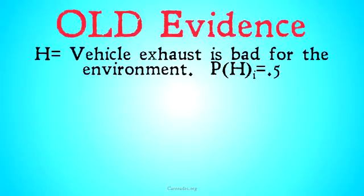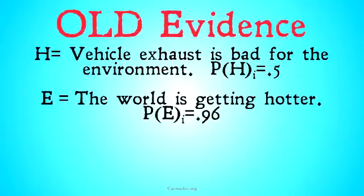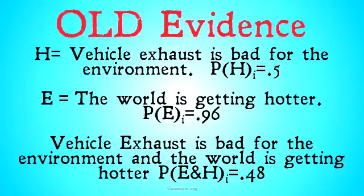Imagine that our hypothesis is 'vehicle exhaust is bad for the environment.' We're not sure if this hypothesis is the case, so we give it a 0.5 degree of belief. We also have a piece of evidence: 'the world is getting hotter.' We're very certain of this — 0.96 certain. And because we don't see any relation between vehicle exhaust and the world getting hotter, we assign 0.48 to the conjunction of those two, which is basically half of our degree of belief in our evidence. That half is going to be perfectly split between P(E and H) and P(not-E and H).